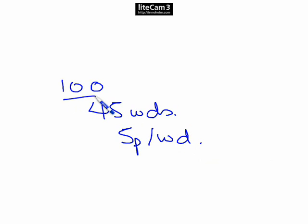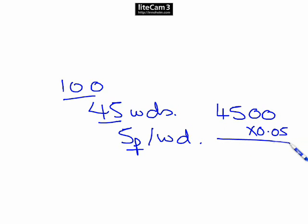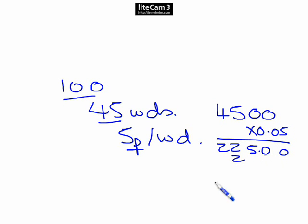So we've got 100 pupils with a sponsored spelling test of 45 words at 5p a word. It's just a case of multiplying out: 100 times 45 gives us 4,500. Then multiply by 5 pence. Remember to put the decimal point in the correct place, and our answer will be 225 pounds.